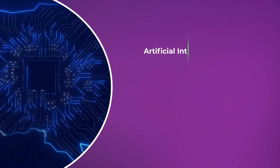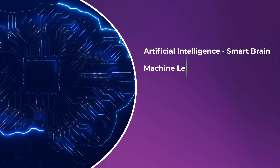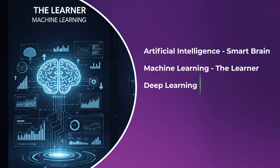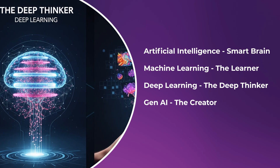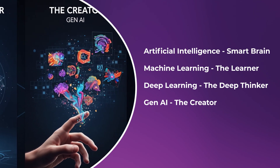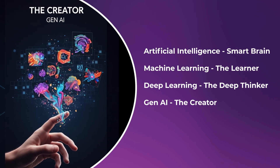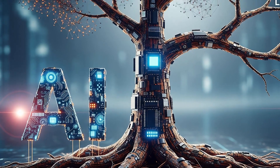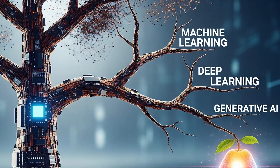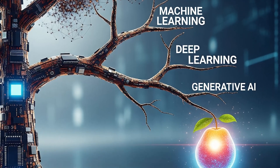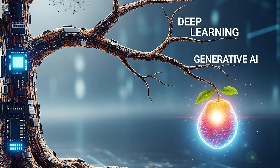So here you can see that in one app we have all four things together. We have Artificial Intelligence — the smart brain. We have Machine Learning — the learner. We have Deep Learning — the deep thinker. And we have Generative AI — the creator. To summarize: AI is the tree, Machine Learning is the branch, Deep Learning is the sub-branch, and Generative AI is the fruit of deep learning.